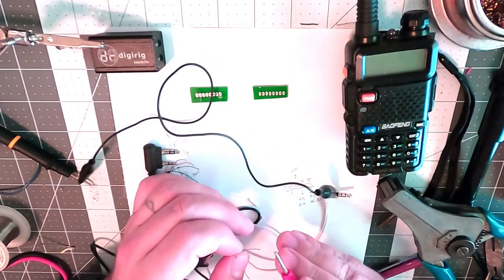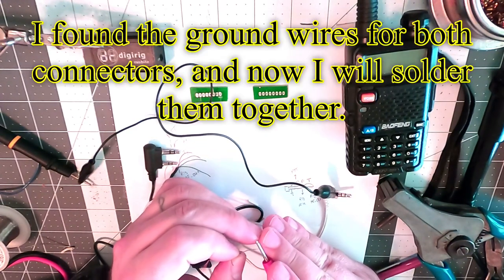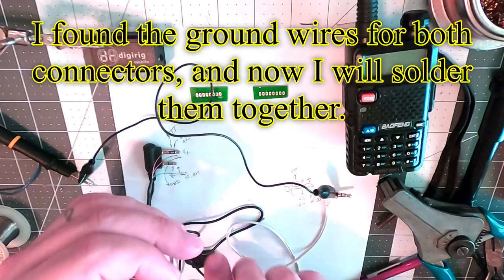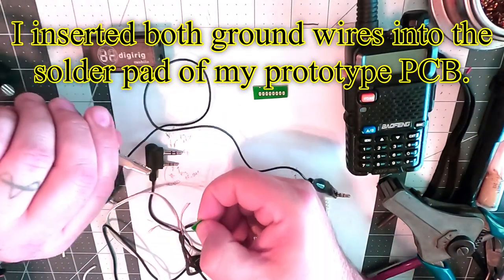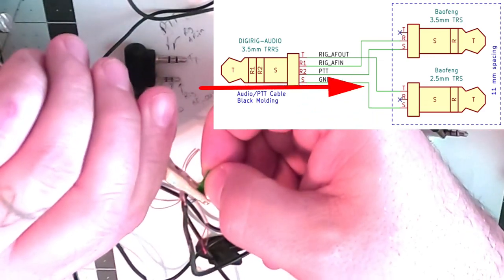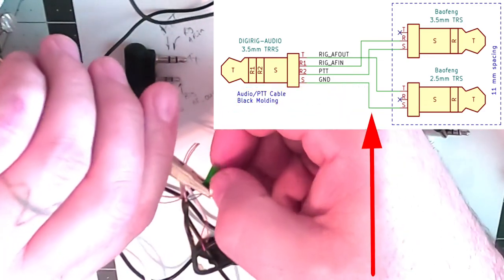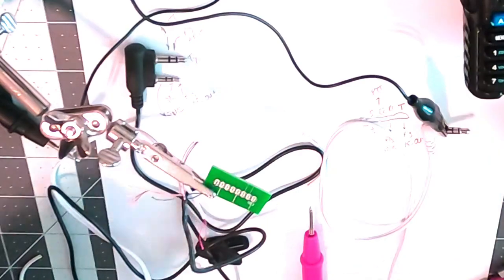And I believe we decided that this blue one, that one is ground. Now we're going to take the helping hands to hold that in place. And that will be the ground connections. Now what we're going to do is we're going to put a little bit of solder flux.